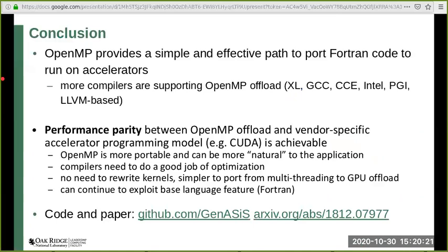In conclusion, from our experience, we can say that OpenMP provides a simple yet effective path to port Fortran code to run on accelerators. It is also encouraging that more compilers are including support for the latest OpenMP standard with offload. We also note that we were able to achieve performance parity for most of our kernels between OpenMP offload and vendor-specific accelerator programming models such as CUDA. However, there are several benefits for us in using OpenMP in that it is a more portable and standardized approach and can be more natural to the application since we do not need to rewrite kernels. We can also continue to exploit features of the base language, Fortran in our case.